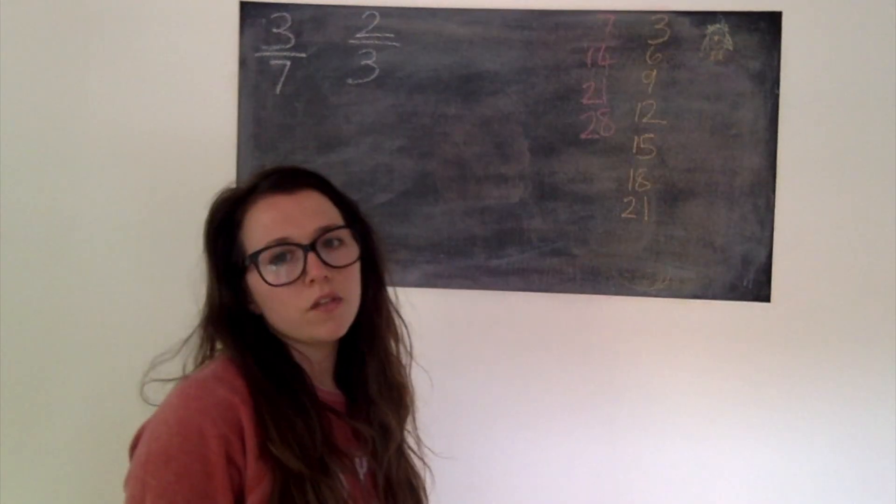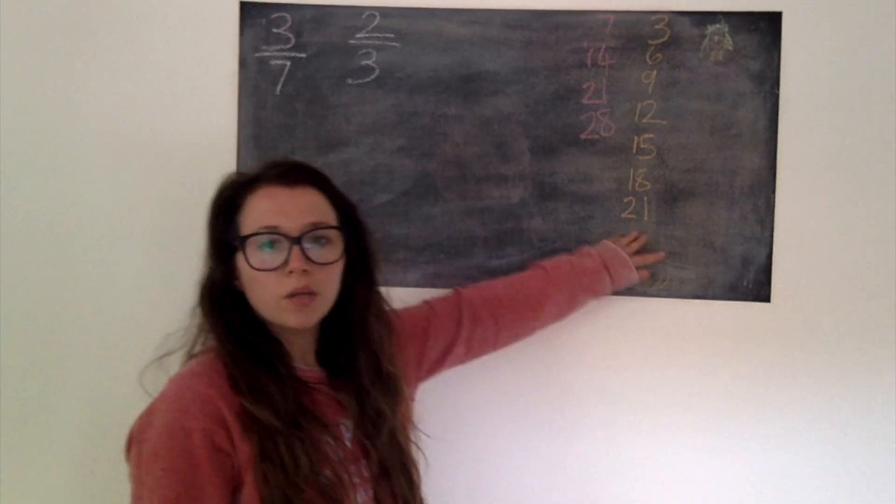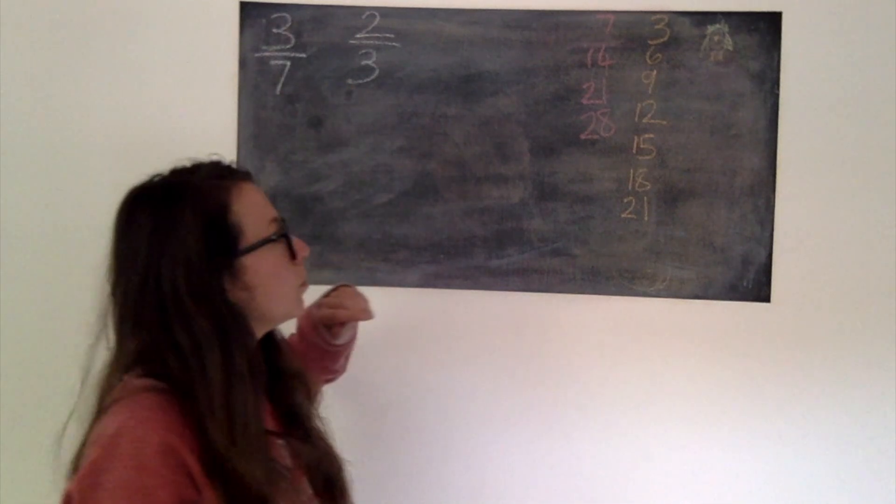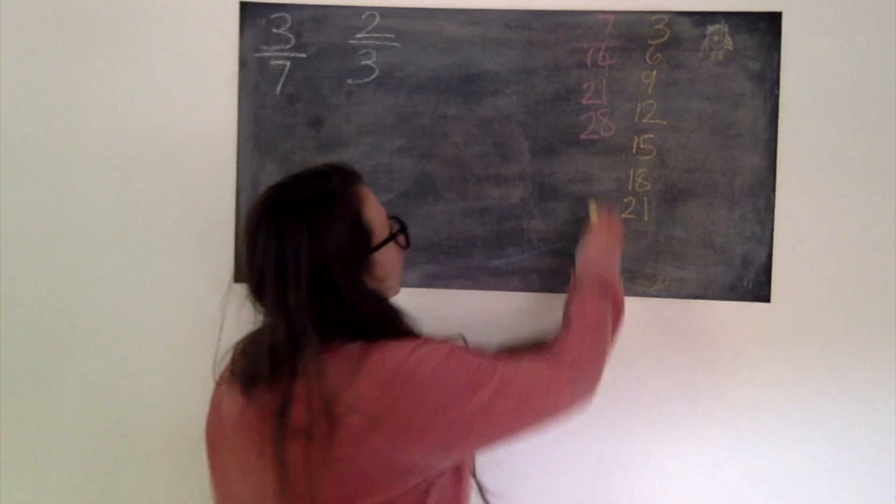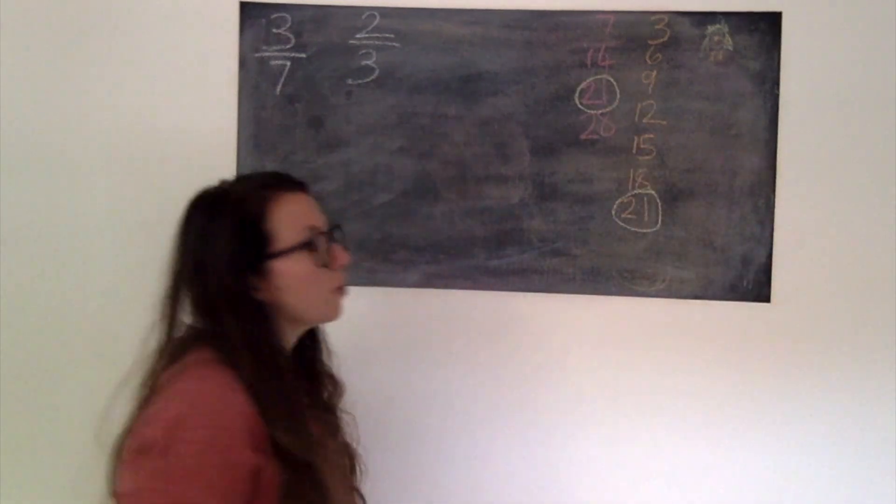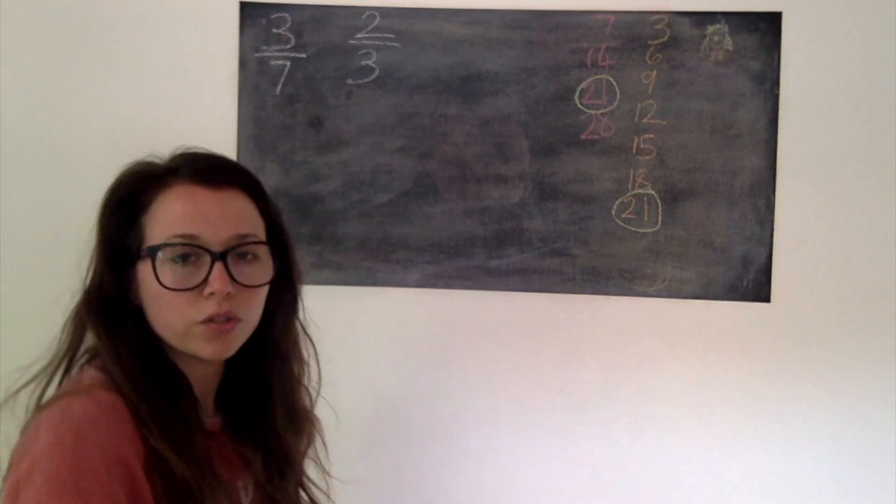Hopefully the first thing that you've done is write out your multiples of 7 and your multiples of 3. Because our denominators are different, to compare they must be the same. So we want to find a common multiple. We can see that 21 is in both of these times tables. So that's our common multiple, our lowest common multiple that we're going to turn these into equivalent fractions for.